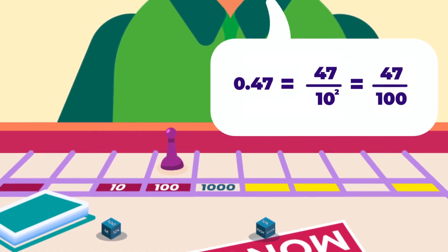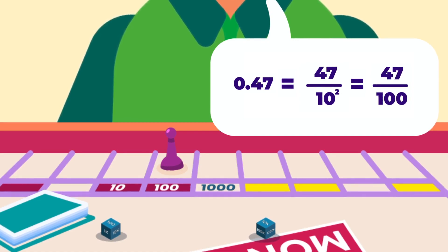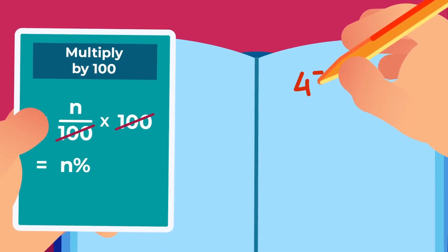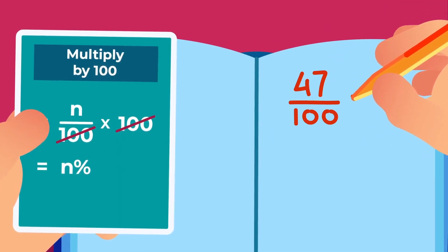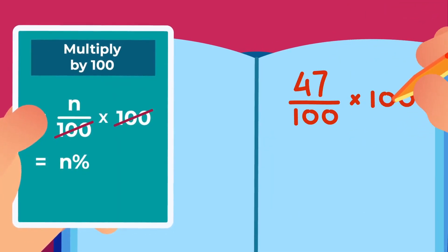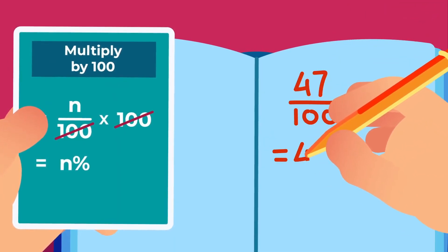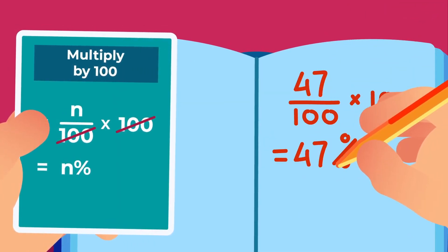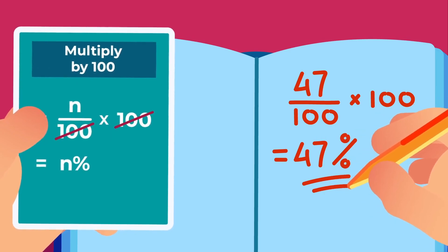0.47 equals 47 divided by 10 squared, equaling 47 divided by 100. Next, multiplying the fraction by 100 and writing the answer as a percentage, which is equal to 47%.